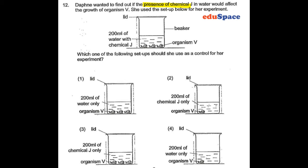In this case, we're trying to find a control setup that will allow her to compare and make observations to see whether chemical J would affect the growth of organism V. We should use a control setup with everything similar to the setup above but without chemical J.